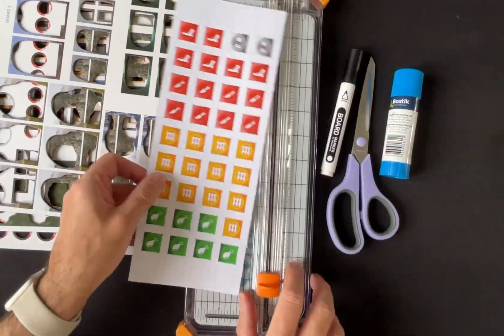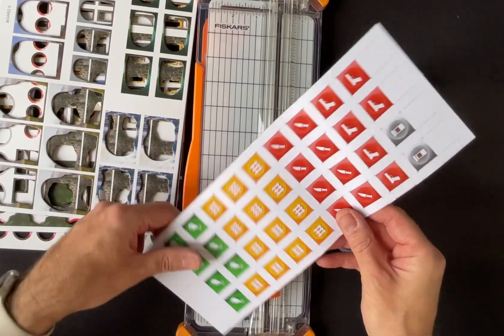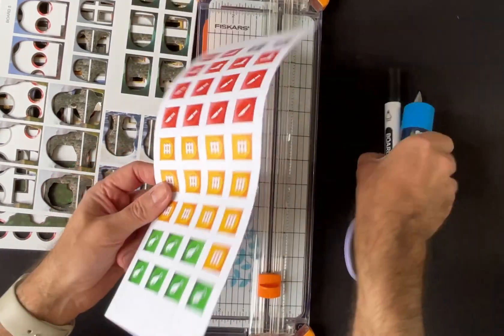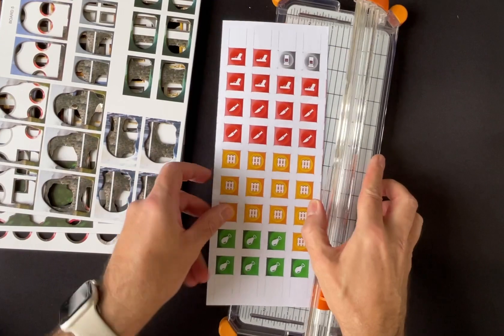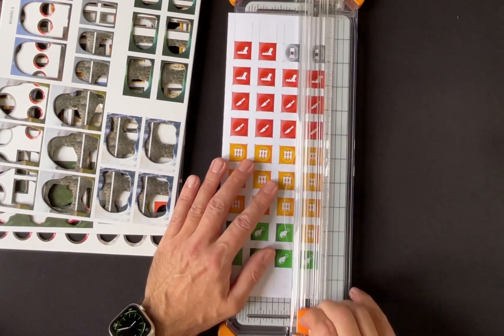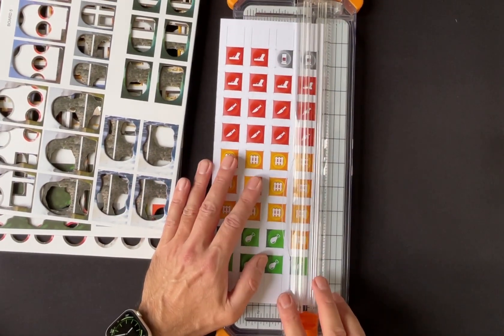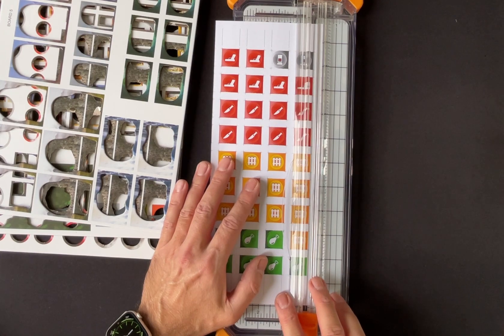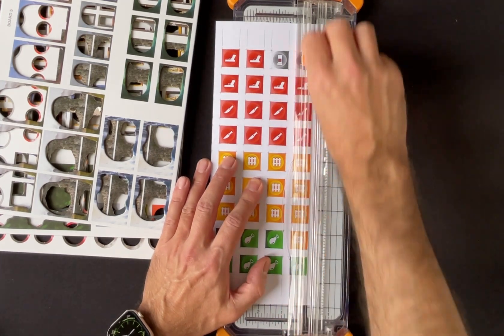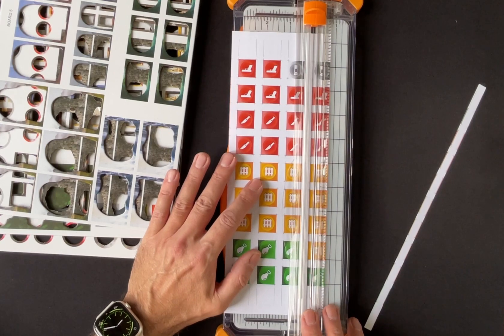So the first thing you do is, once you've printed out your set of tokens, as you can see I've already had a go at these ones, you just trim them off, which is fairly easy.